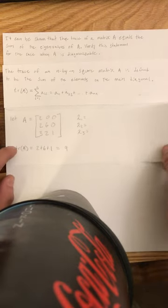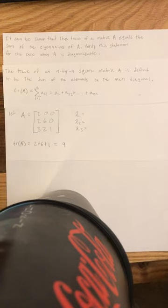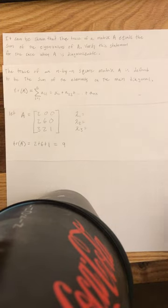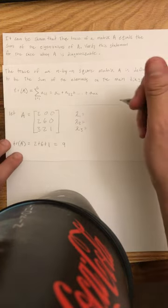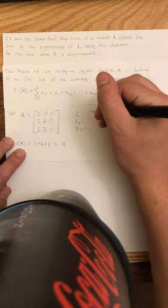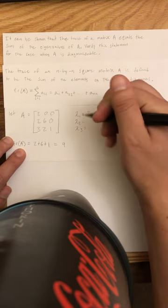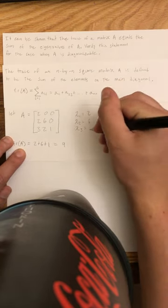So let's look at this example. Let A equal this matrix here. Since it's diagonalizable and triangular we get three distinct eigenvalues. You get 2, 6, and 1.